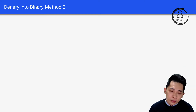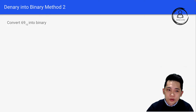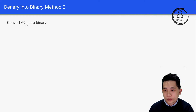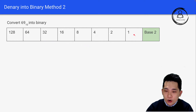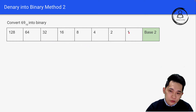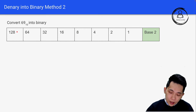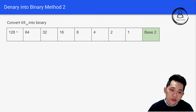Now let's look at converting denary to binary using Method 2. How do you convert 69 into binary? We set up the powers of 2: 1, 2, 4, 8, 16, 32, 64, 128 — that is 2 to the power of 0, 1, 2, 3, 4, 5, 6, 7. We'll use some logic to determine the bits.